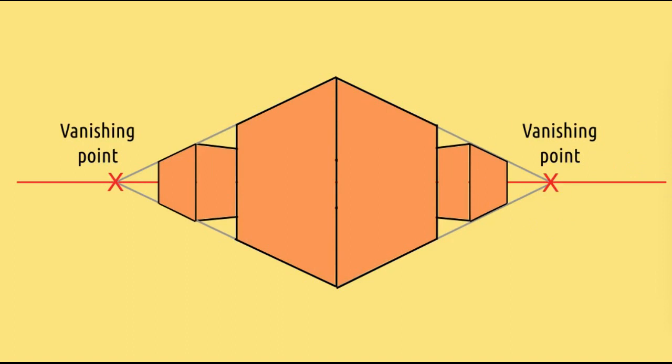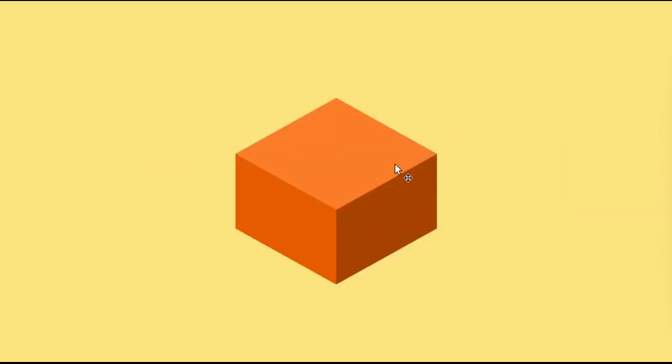Now let's see an isometric cube. If you see, all these lines which are parallel in 3D world are also parallel in 2D world. So these edges actually never intersect anywhere. That's so cool.